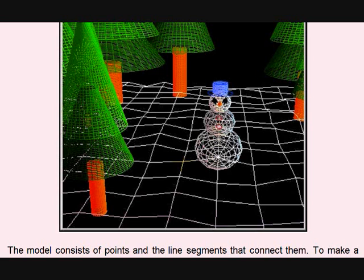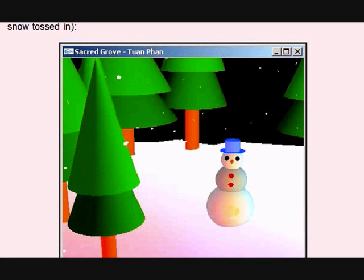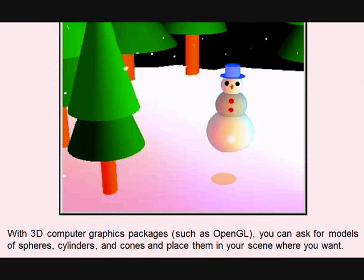The model consists of points and line segments that connect from one point to another to make a realistic picture. With points and lines we created a three-dimensional picture. This is how vectors get applied in computer graphics.